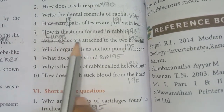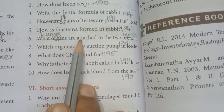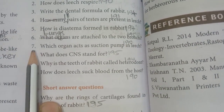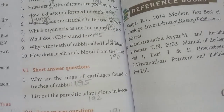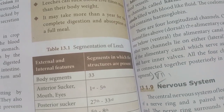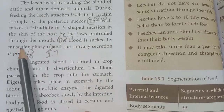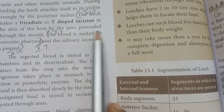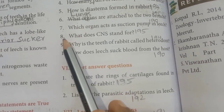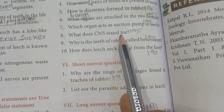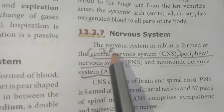Question 6: What organs are attached to the two bronchi? Answer: Lungs. Question 7: Which organ acts as a suction pump in leech? Refer to page 190. Answer: The blood is sucked by the muscular pharynx. Question 8: What does CNS stand for? Refer to page 195. Answer: CNS stands for central nervous system.